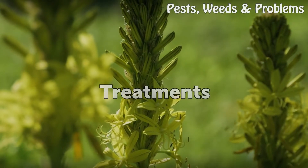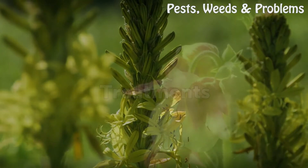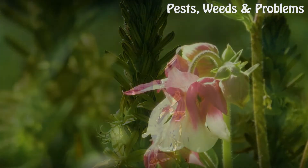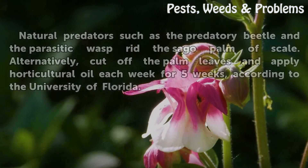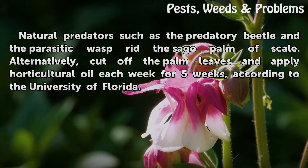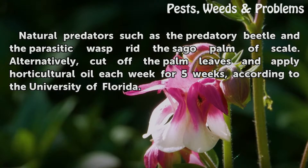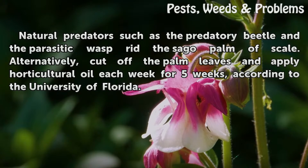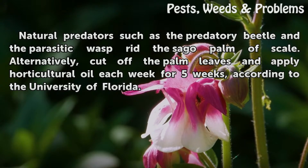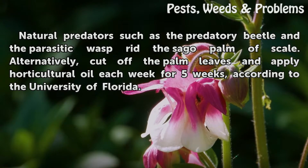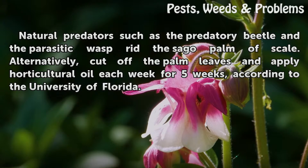Treatments. Natural predators such as the predatory beetle and the parasitic wasp rid the Saco palm of scale. Alternatively, cut off the palm leaves and apply horticultural oil each week for five weeks, according to the University of Florida.